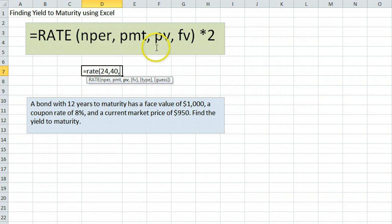The next piece of information is the present value. The present value is the current market price that you will pay now, $950. We're going to put that in as negative to represent the fact that you're paying the $950, not receiving it.